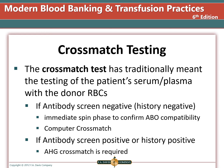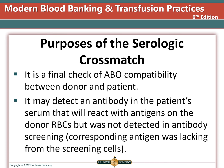If the person has a current positive antibody screen or a positive history, then the AHG cross-match with antigen-negative units is required. A serological cross-match can detect ABO incompatibility at immediate spin, and can detect an antibody in the patient's plasma that will react with antigens on donor red blood cells but that have not been detected in an antibody screen.